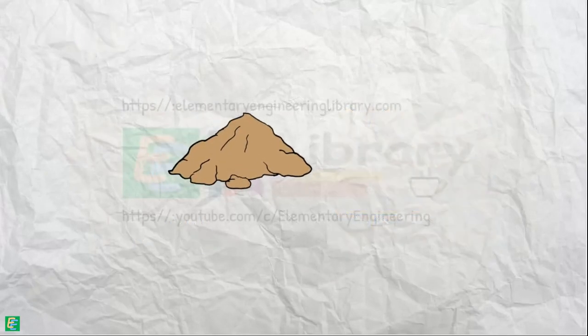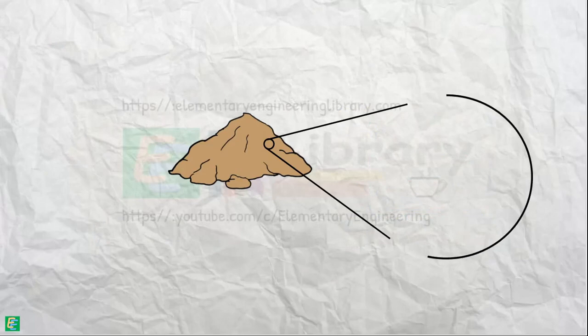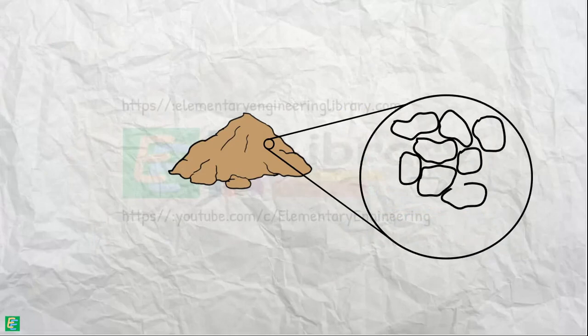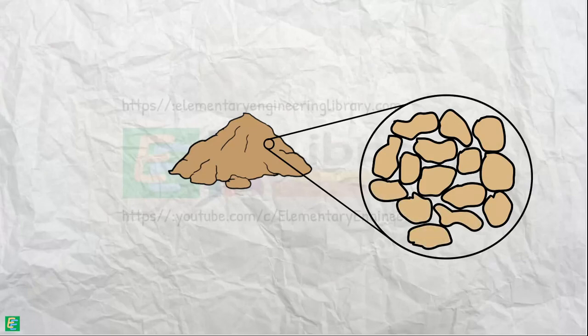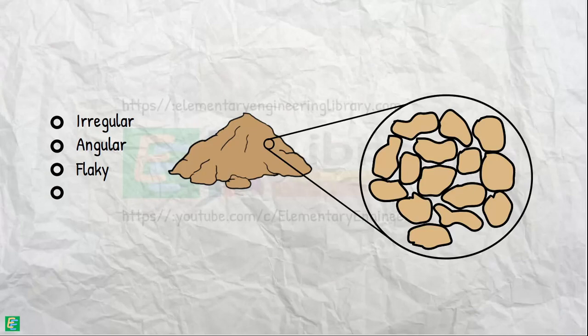But in reality, soil doesn't consist of perfectly spherical grains, nor are they perfectly arranged in a particular fashion. They are irregular, angular, flaky, or elongated.